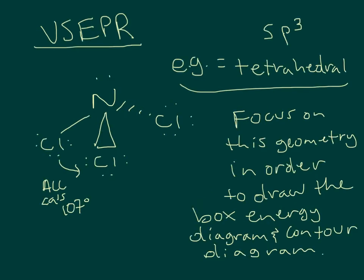Here we have the VSEPR diagram drawn on the left. This would be considered a tetrahedral electron geometry shape for this molecule. We want to focus on this geometry in order to draw the energy diagrams and the contour diagrams later on. All of the angles in this tetrahedral shape are 107 degrees, and are being pushed down by the lone pairs up above the nitrogen atom.